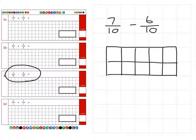And then if we shade 7 of those 10, that's 5, 6, 7. And then we subtract 6 of those tenths, 2, 3, 4, 5, 6. And we're left with 1 out of 10.